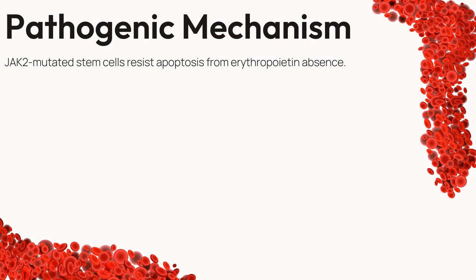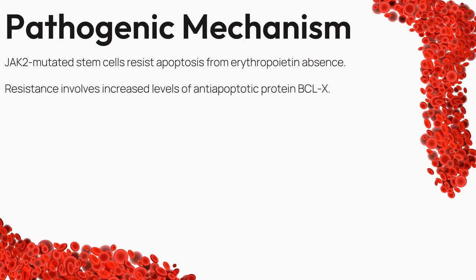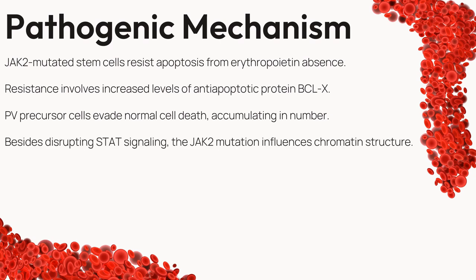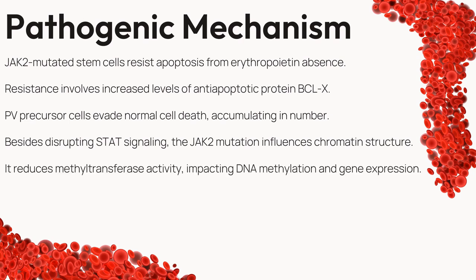Remarkably, JAK2-mutated stem cells exhibit resilience to apoptosis triggered by the absence of erythropoietin. This resistance is achieved through increased levels of the antiapoptotic protein BCLX. As a consequence, precursor cells in PV manage to escape normal cell death, accumulating in number — a phenomenon that contributes to the overall disease picture. Furthermore, the JAK2 mutation's influence extends to chromatin structure, impacting DNA methylation and gene expression.